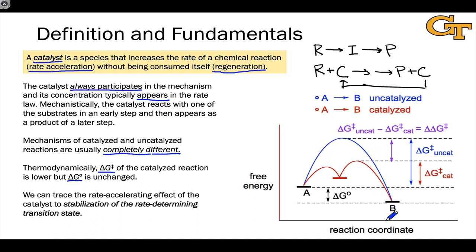In blue, we have the uncatalyzed pathway, the conversion of A to B without a catalyst. And we can see it occurs through a single step mechanism, a single transition state at the top of the reaction coordinate diagram. And after that single step, we form B, the product.